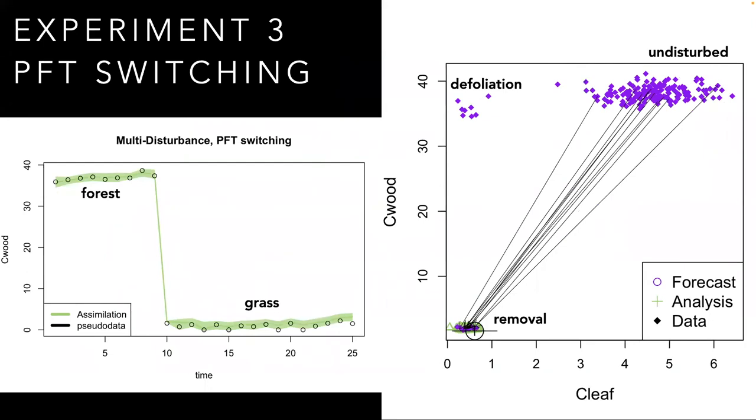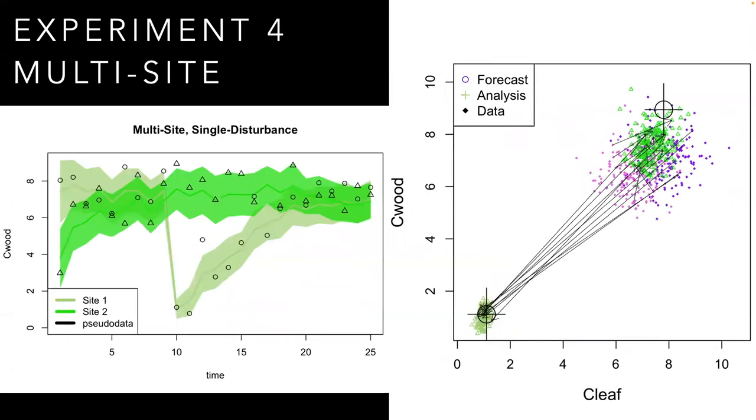Our third experiment was similar to our second, but now the assimilation captures a removal associated with a land cover change to a new plant functional type. In practice, that involves updating PFT assignments and thus parameter vectors on an ensemble member by ensemble member basis.